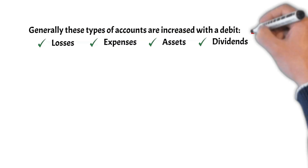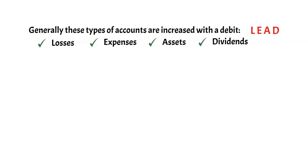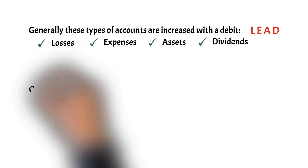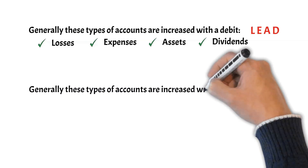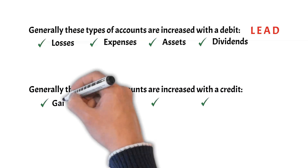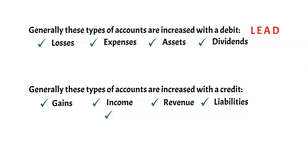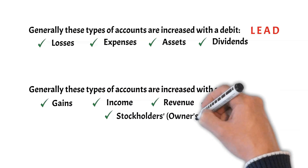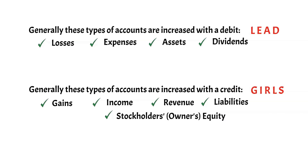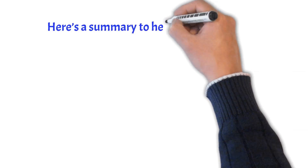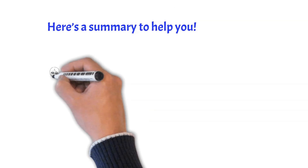You might think of the word LEAD when recalling the accounts that are increased with a debit. Generally, the following types of accounts are increased with a credit: Gains, Income, Revenues, Liabilities, and Stockholders/Owners Equity. You might think of the word GIRLS when recalling the accounts that are increased with a credit. To decrease an account, you do the opposite of what was done to increase the account. For example, an asset account is increased with a debit, therefore it is decreased with a credit.